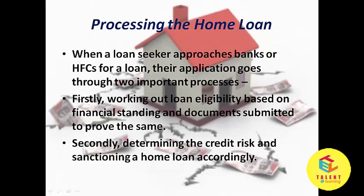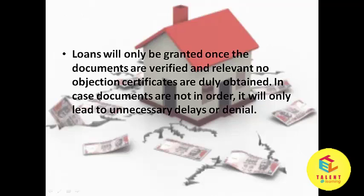When processing a home loan, when a loan seeker approaches banks or HFCs for a loan, their application goes through two important processes. First, working out loan eligibility based on financial standing and documents submitted to prove the same. Second, determining the credit risk and sanctioning a home loan accordingly. Loans will only be granted once the documents are verified and relevant no-objection certificates are duly obtained. If documents are not in order, it will only lead to unnecessary delays or denial.